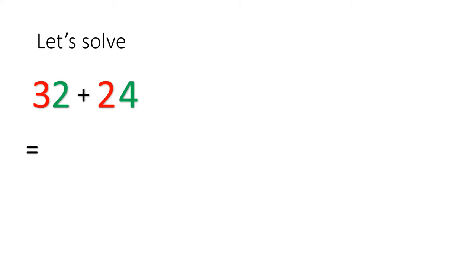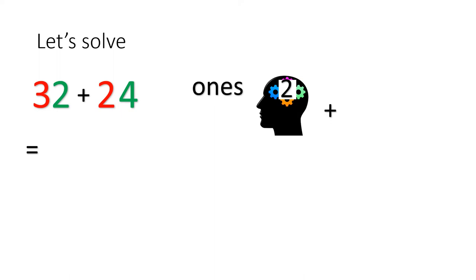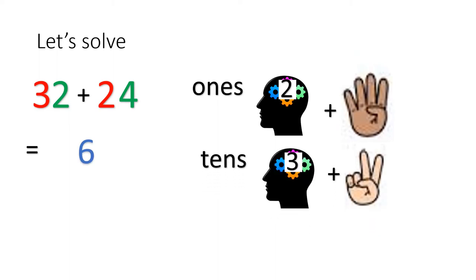Now let's solve 32 plus 24. Look at the 1s — so 2 plus 4. Count the number after 2, making sure you close each finger when you count: 3, 4, 5, 6. So we write 6. Next we solve the tens. You have 3 — put 3 in the brain and 2 on your fingers. Let's count: what's the number after 3? 4, 5. So the answer is 56.